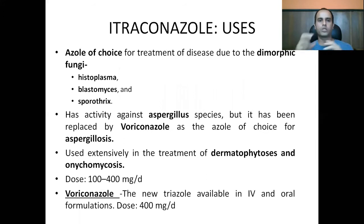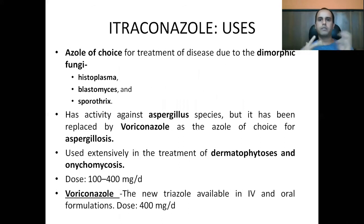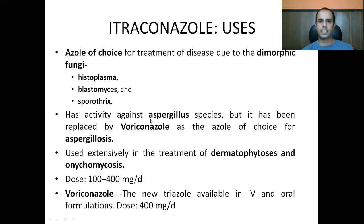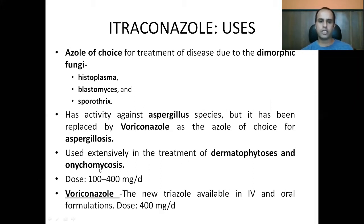Dimorphic fungi take the structure of both yeasts (single cell) and molds (multicellular) at different times — such as Histoplasma, Blastomyces, and Sporothrix. Itraconazole can be used for the treatment of dimorphic fungi. It also has activity against Aspergillus species, though voriconazole is now the azole of choice for aspergillosis. Itraconazole is used extensively for dermatophytosis and onychomycosis, given at 100–400 mg per day.